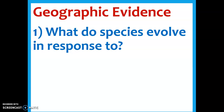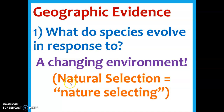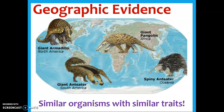So as far as geographic evidence - geography - what do species evolve in response to? We've been talking about natural selection, nature selecting for certain traits. A change in environment is what's going to cause species to change; if the environment doesn't change, they're just going to stay the same. So if we've got two environments that are geographically separated but have very similar climates and soil, then we're going to expect to find very similar organisms in those separate environments. Think like South America and Africa, separated by the ocean, but certain areas have very similar environments.